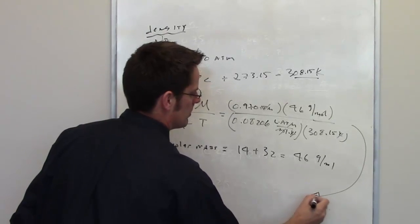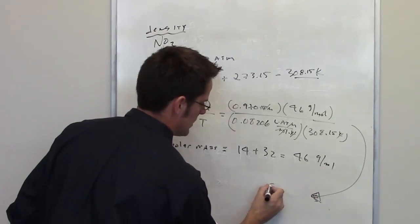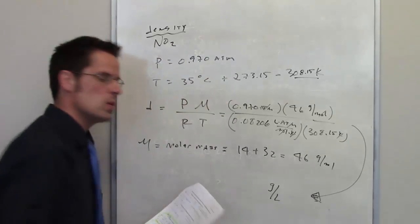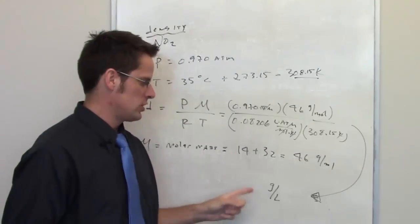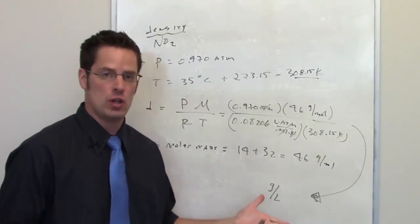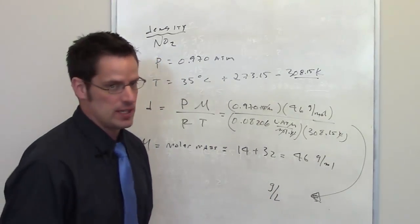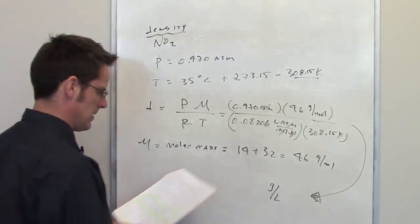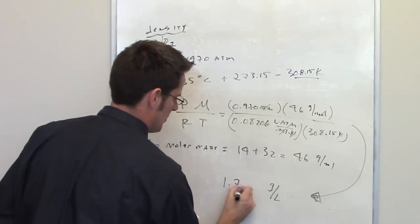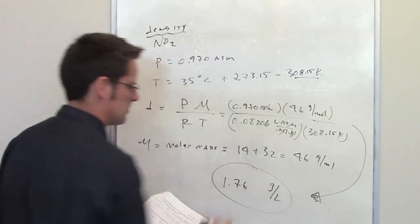We're left with units of grams per liter. Those are acceptable units for density. Density is, of course, a certain amount of weight in a certain volume. Those are not SI units for density, by the way, but they're acceptable for this problem. So all I have to do is plug and chug, and when I do that on my calculator, I end up getting an answer of 1.76 grams per liter.